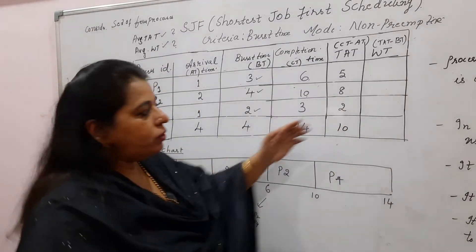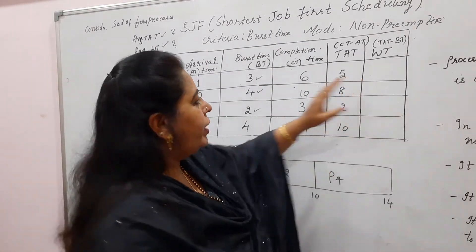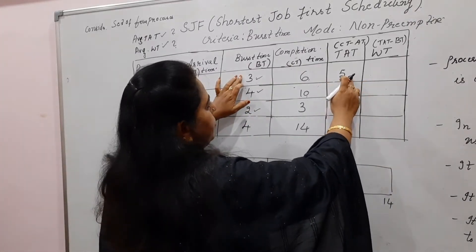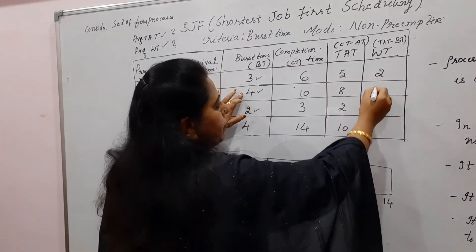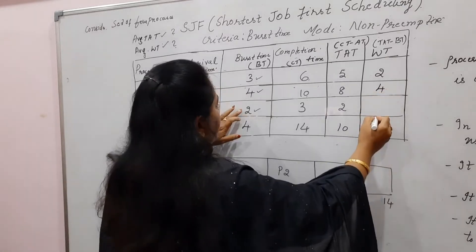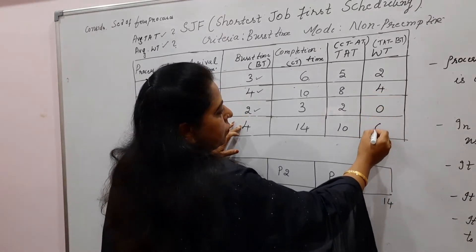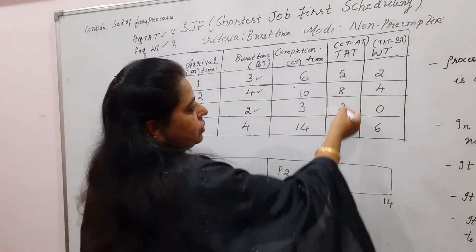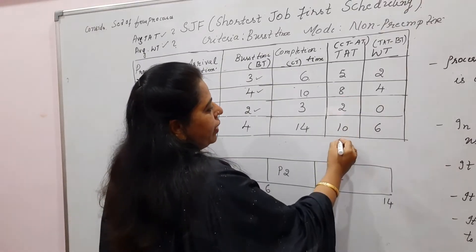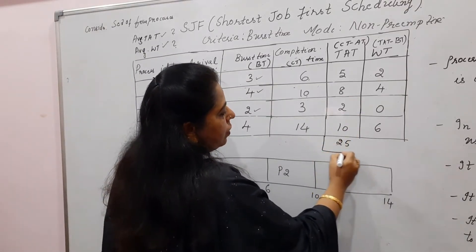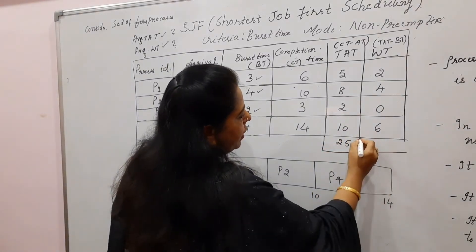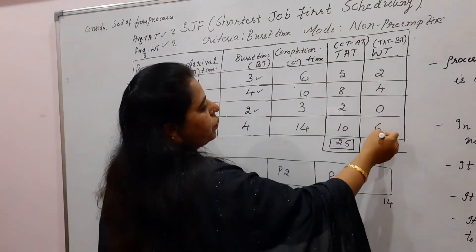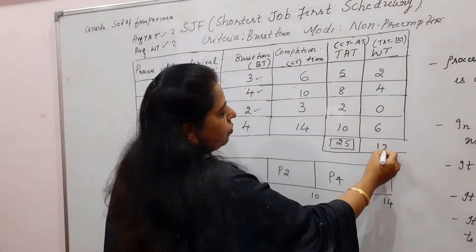Now write the waiting time values — waiting time equals turnaround time minus burst time: P1 = 5−3 = 2, P2 = 8−4 = 4, P3 = 2−2 = 0, P4 = 10−4 = 6. Adding the turnaround times: total = 25. Adding the waiting times: 2+4+0+6 = 12.